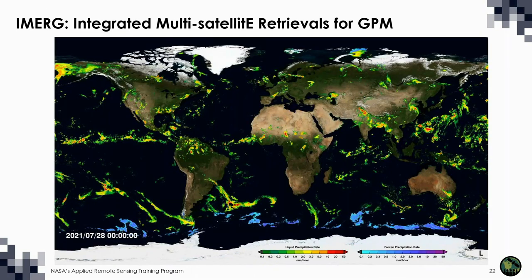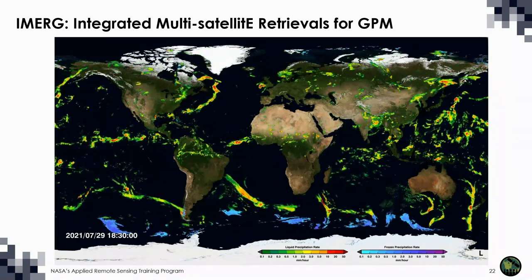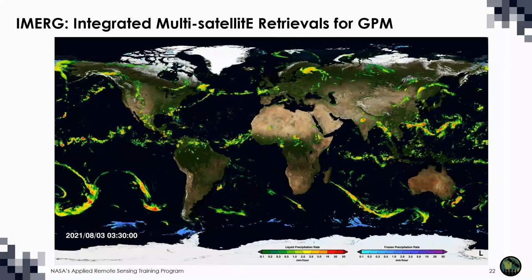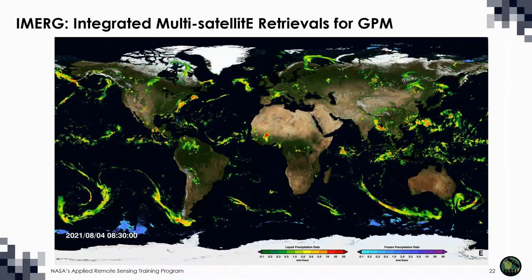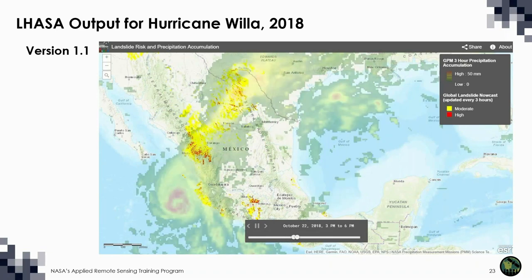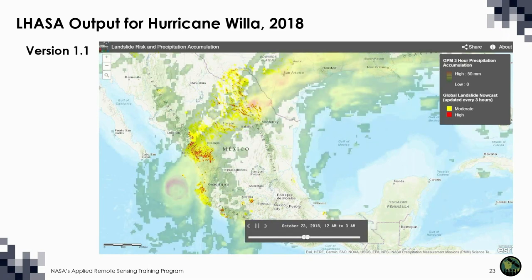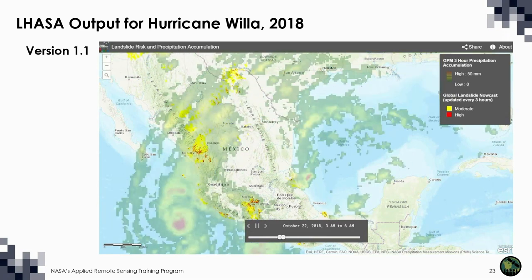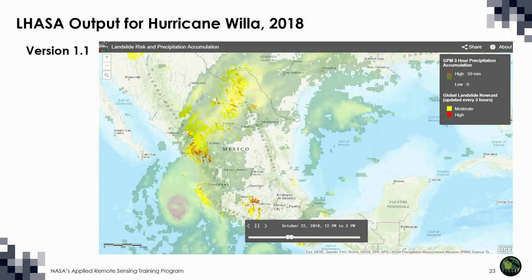The rainfall estimates come from the GPM Core Observatory and several other satellites via a Level 3 product called iMerge. The iMerge algorithm produces a globally consistent view of precipitation with a tenth of a degree half-hourly resolution. When we run the model over time, the results look like this example of Hurricane Willa passing through Mexico. The potential for landslides was not just located where the eye of the hurricane made landfall, but was spread over a vast area. We also ran the model retrospectively, which gives us a sense of how landslide hazard changes over time and space.